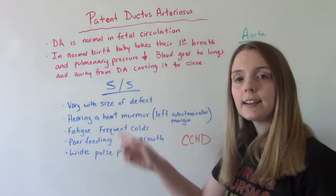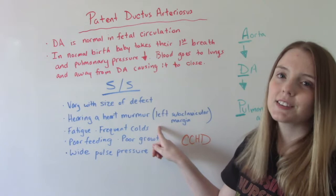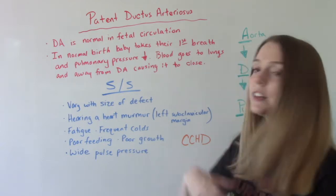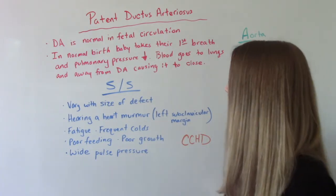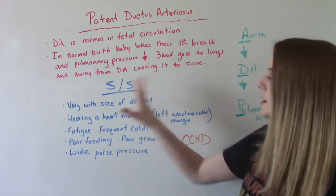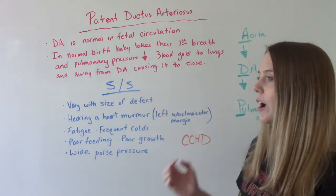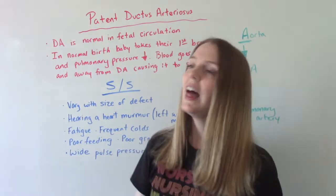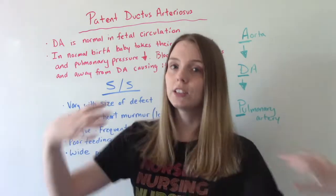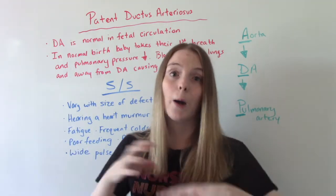When you're doing the assessment and listening for that murmur, the best place to find it is the left subclavicular margin. Other symptoms the baby might have include fatigue, feeding poorly, and widening pulse pressure. PDA is one of those things where if it's small you might never know they have it — they could have it well into adulthood. If it's large, it causes all these complications and problems, so it's very individual depending on how big the defect is.